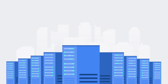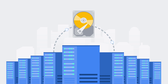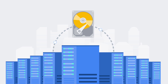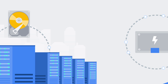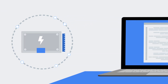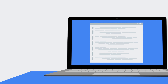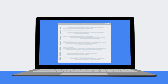Standard persistent disk, or HDD, is low-cost and best suited for large data processing workloads that primarily use sequential IOs. SSDs are better for high-performance apps and databases that require lower latency and more IOPS.